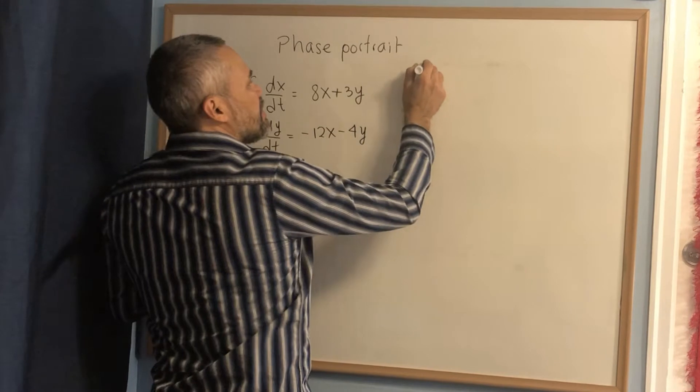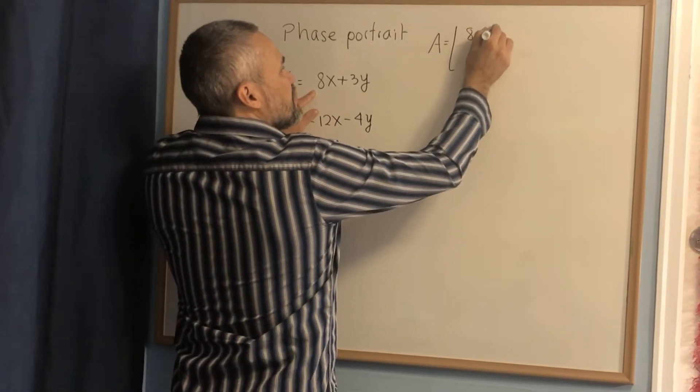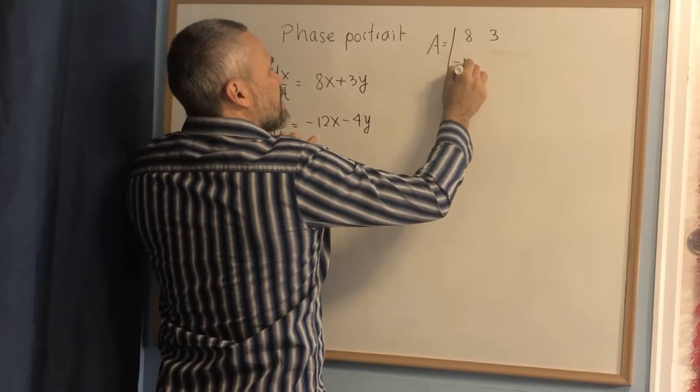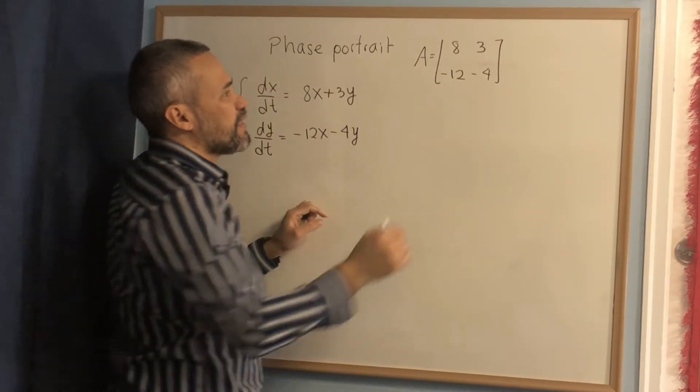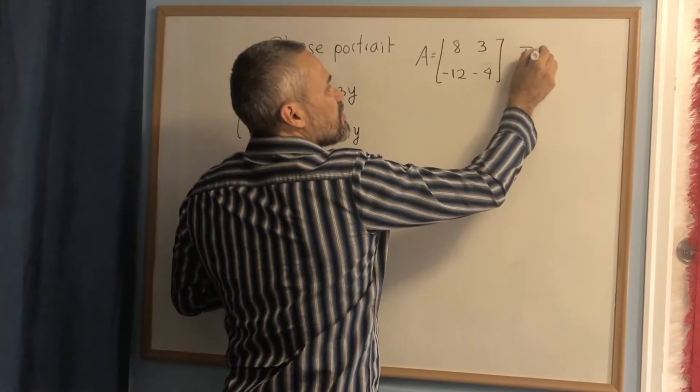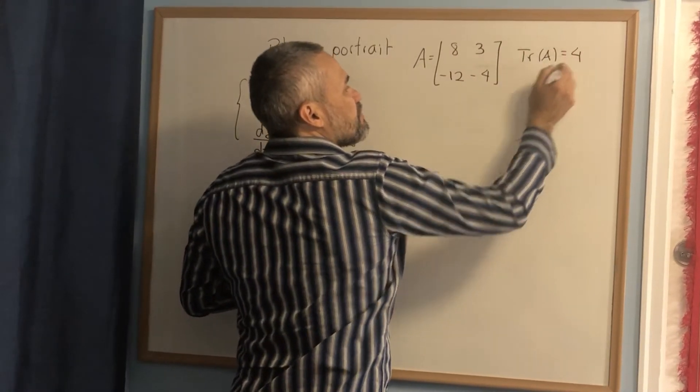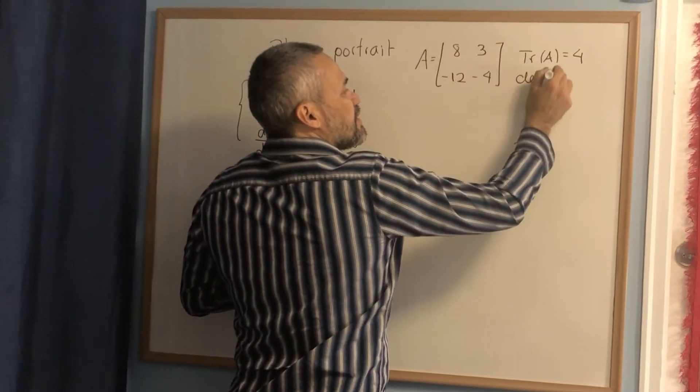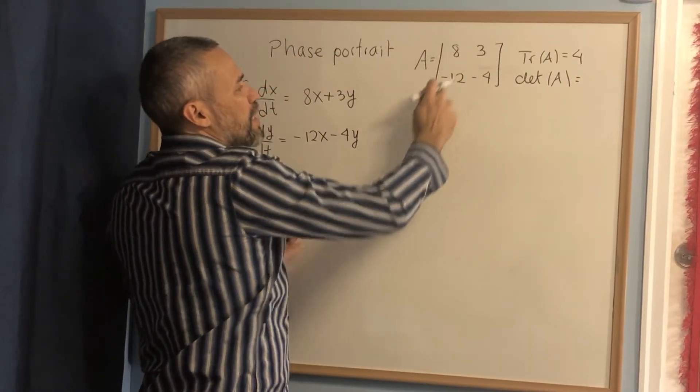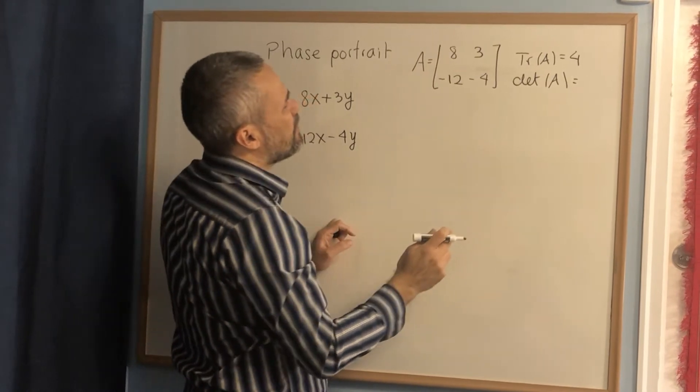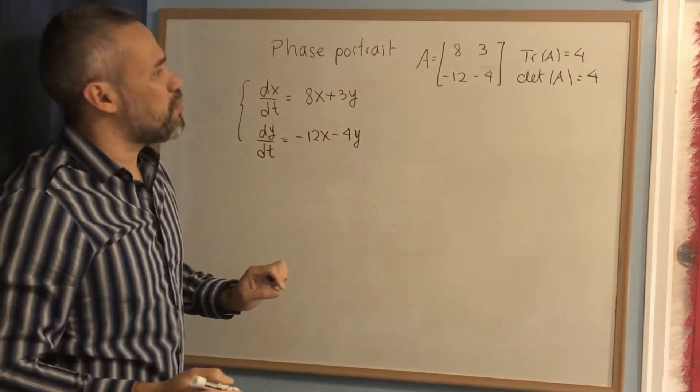We do the matrix of the system. In this case, the matrix is 8, 3, negative 12, negative 4. Then we compute the characteristic equation. To do that, we need the trace of A, which is 8 plus negative 4, equals 4. And the determinant of A, which is negative 32 plus 20 plus 36, equals positive 4.